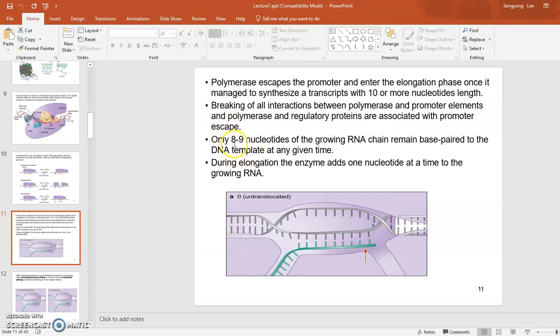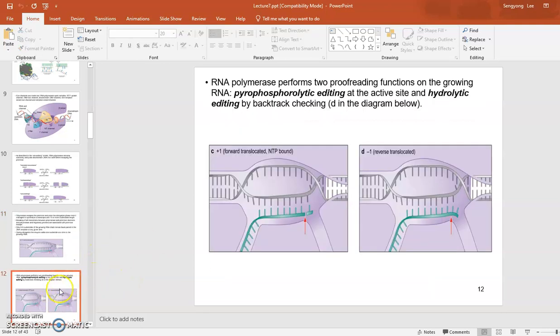Only eight to nine nucleotides of the growing RNA chain remains base paired with the DNA template at a given time, so eight to nine nucleotides are engaged in the polymerase at a given time. During elongation, the enzyme adds one nucleotide at a time to the growing RNA.